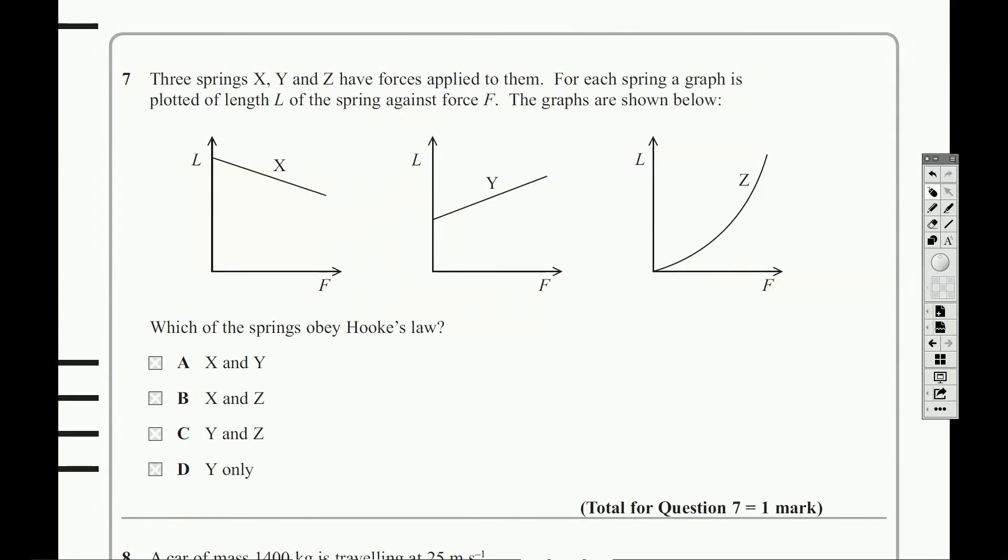Three springs, X, Y, and Z, so three graphs representing those, have forces applied to them. For each spring, the graph is plotted length against force. Graphs are shown below. There we go. One, two, three. And you're asked which of them obey Hooke's law. You should be okay with this, really.